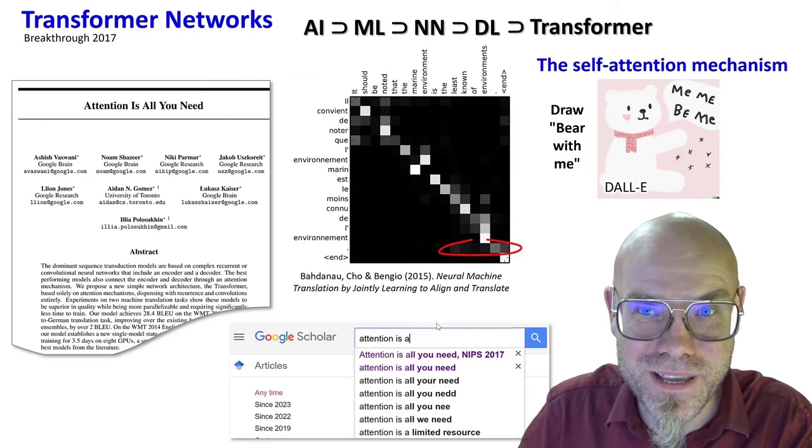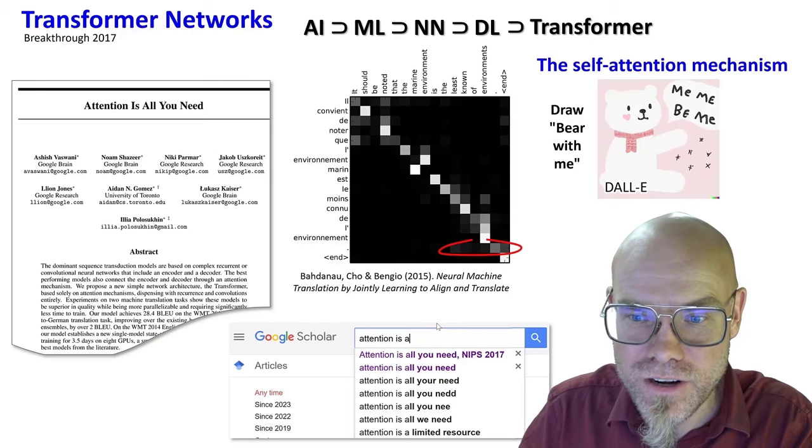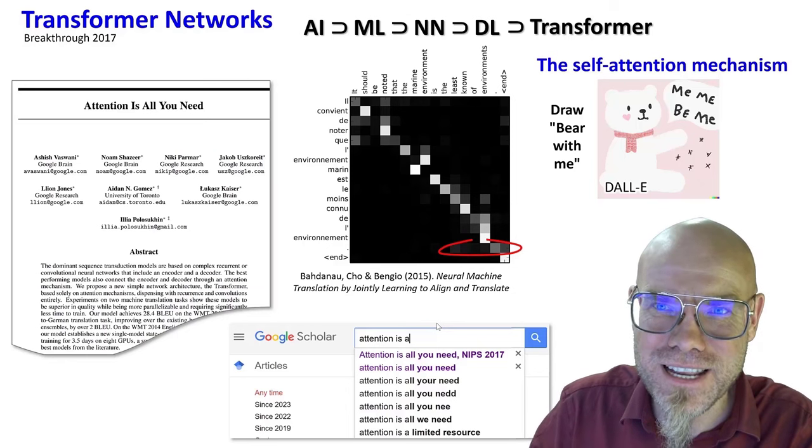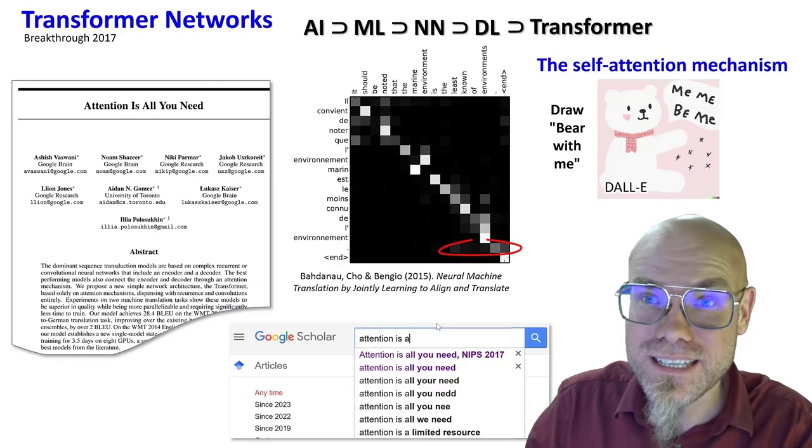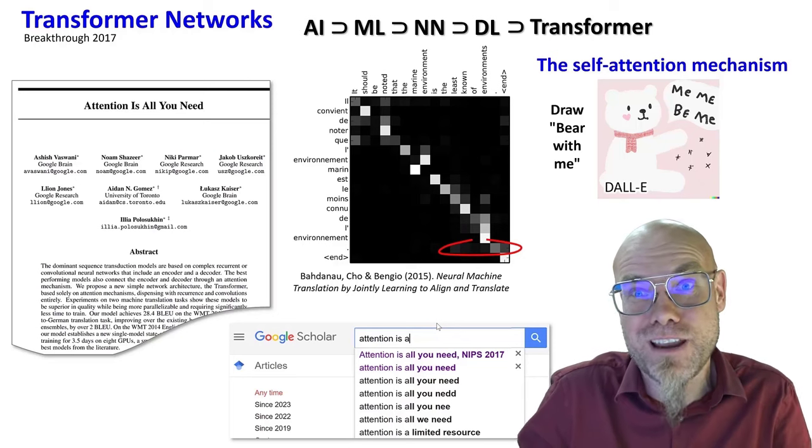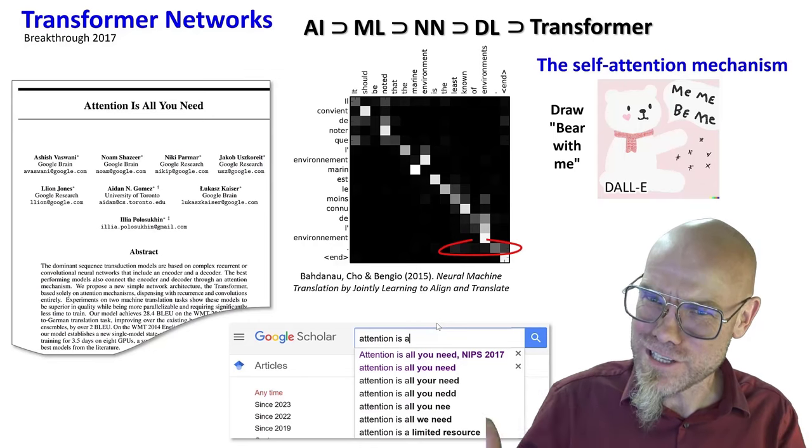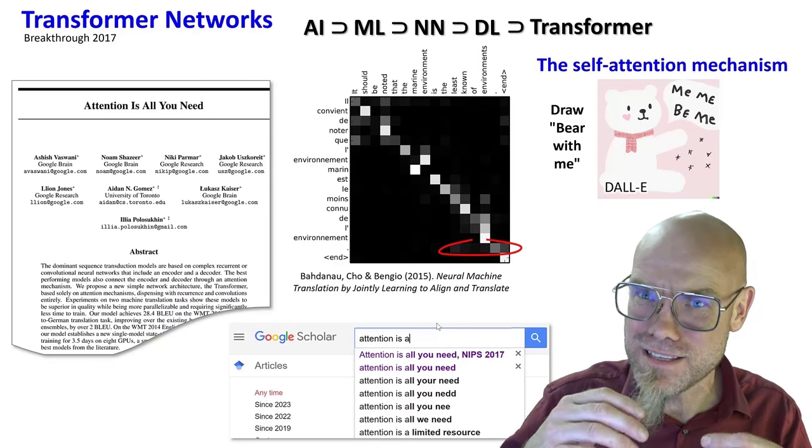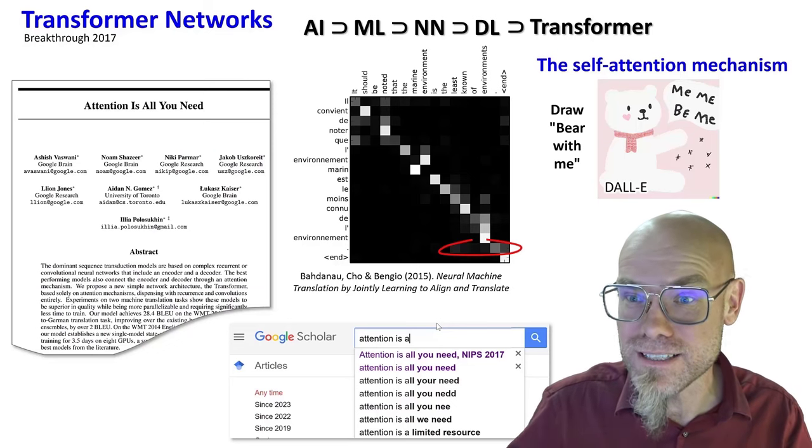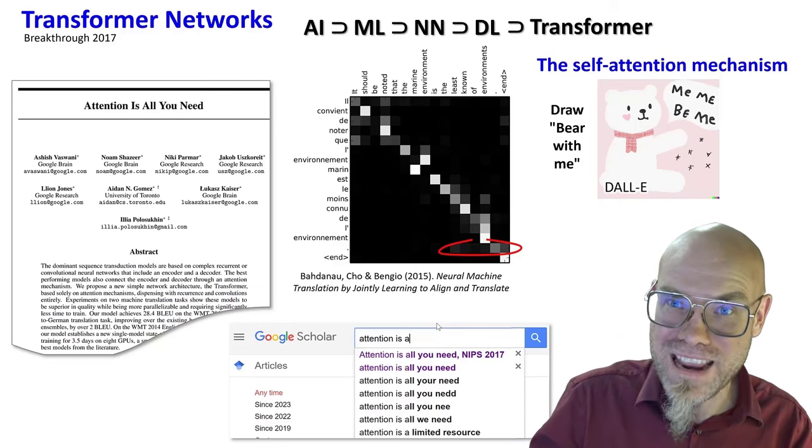That's what the problem of self-attention is basically about. Why did this generative AI generate an image that says 'bear with me' like this? It's comical and funny because it didn't have enough context. It didn't know where to put the attention. I just told it 'draw bear with me' and it drew a bear with me. But that's not what I meant because the context here is we're in a lecture, I'm explaining a concept, so I said 'bear with me.'